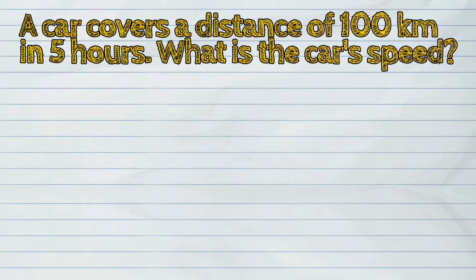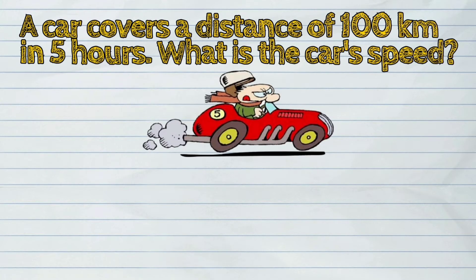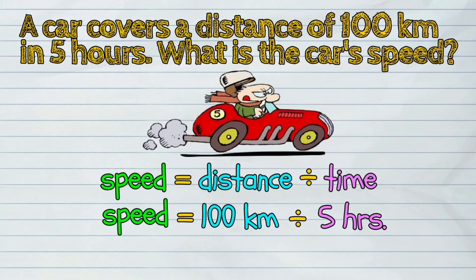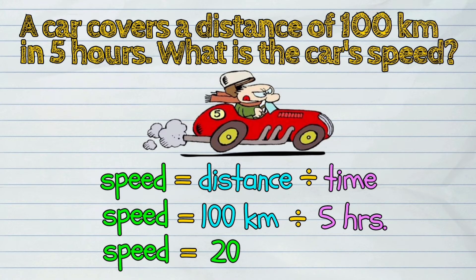For example, a car covers a distance of 100 kilometers in 5 hours. What is the car's speed? Again, the formula is speed equals distance divided by time. So we write speed equals 100 kilometers divided by 5 hours. The answer here is 20. So we say that the speed of a car is 20 kilometers per hour.